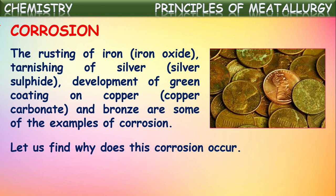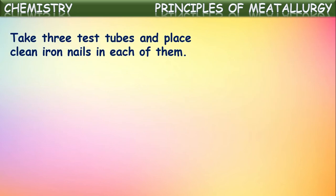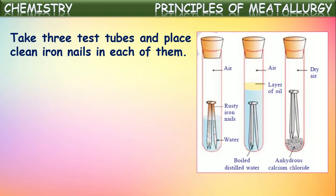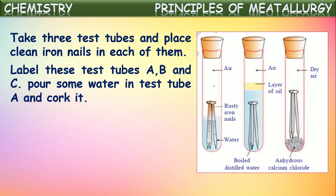Let us find this through a simple activity. First, let us take three test tubes and place clean iron nails in each of them. Two or three iron nails are kept in each test tube. Now let us label these test tubes as A, B, and C to identify how rusting is occurring.